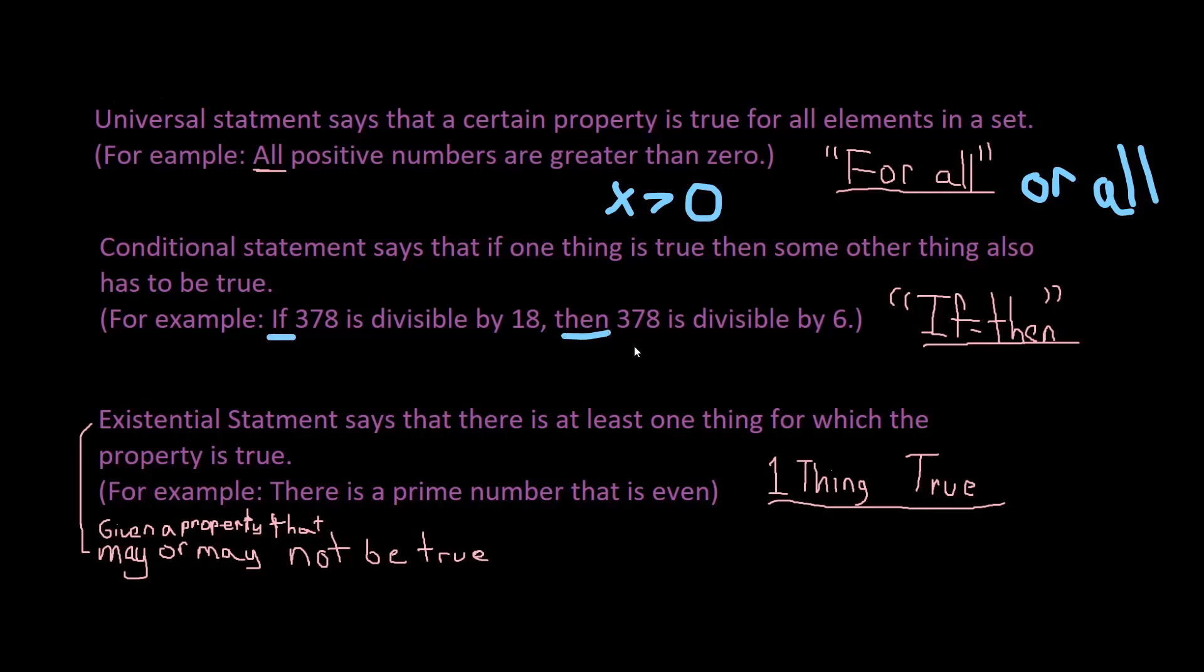Our last mathematical statement is an existential statement. An existential statement says that there is at least one thing for which the property is true given that a property that may or may not be true.